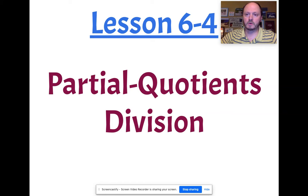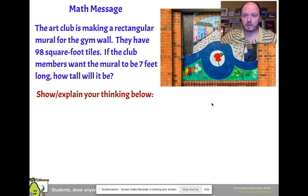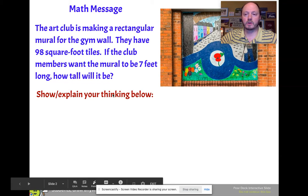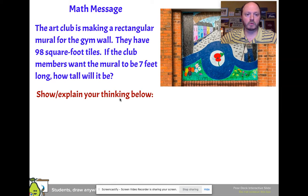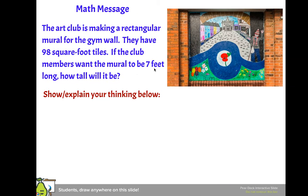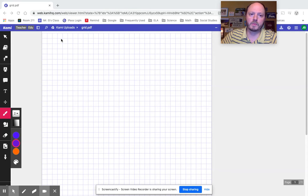The question I'd like you to work on solving, I hope you already did solve it in the Pear Deck: the art club is making a rectangular mural for the gym wall. They have 98 square foot tiles. If the club members want the mural to be seven feet long, how tall will it be? So the key numbers we have here are 98 and 7, and what are we doing with them? We're dividing. So let's jump over to my Kami paper.